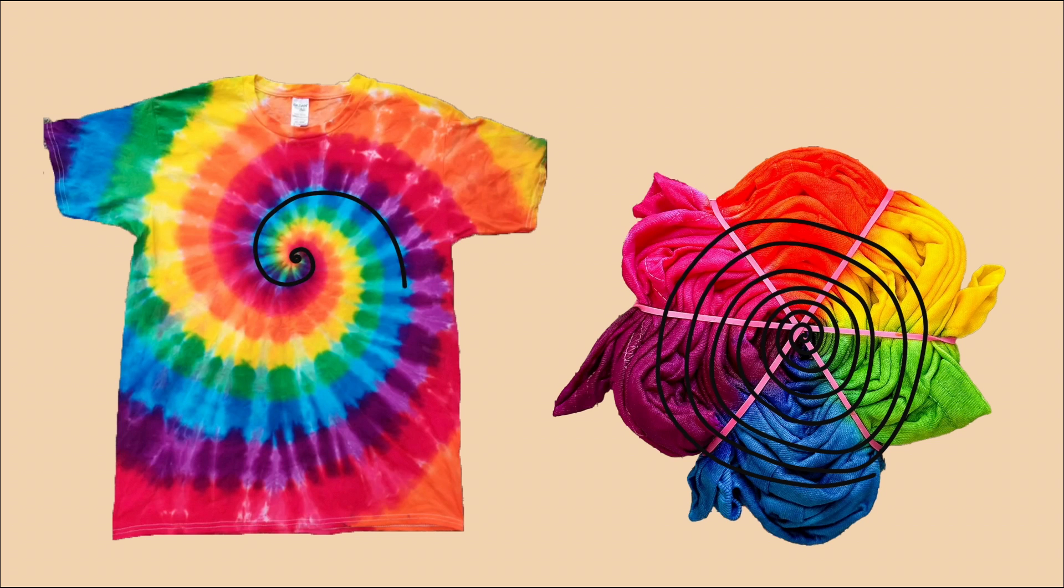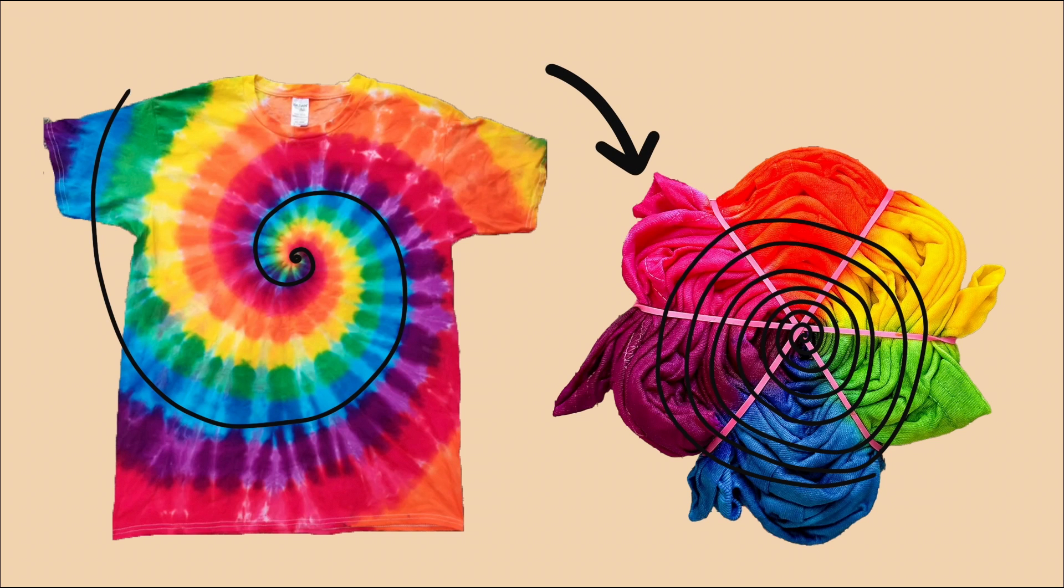There are actually two spirals that are important for us to consider. The spiral formed when we twist the shirt into a disc, and the spiral design seen after dyeing and untwisting the shirt. I thought I had a better chance of finding the equation of the disc spiral before finding the equation of the dyed spiral we see. So how can I go about finding out what spiral it is?